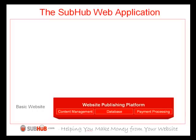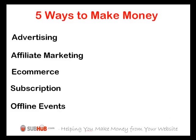By having these in place at the outset, you will be able to choose exactly how you make money. And as you know from video three in this series, there are five ways to make money: advertising, affiliate marketing, e-commerce, subscription, and promoting offline events. You should ensure you use a technology platform that gives you the flexibility to choose any or all of these monetization options.